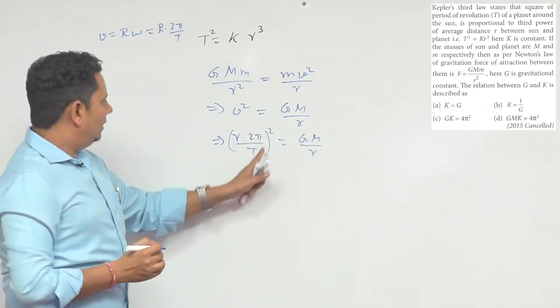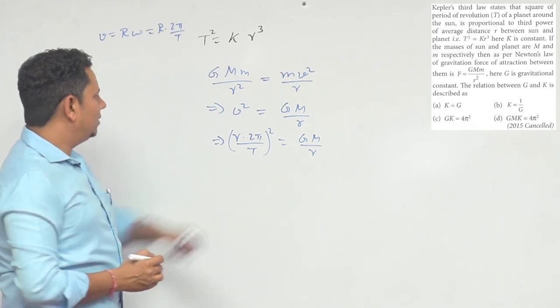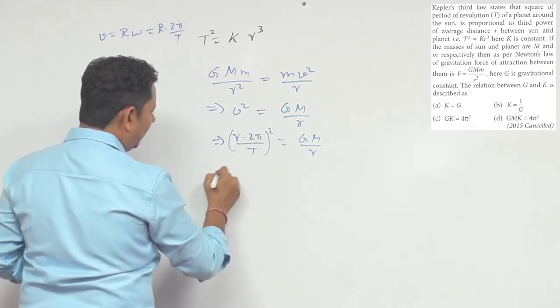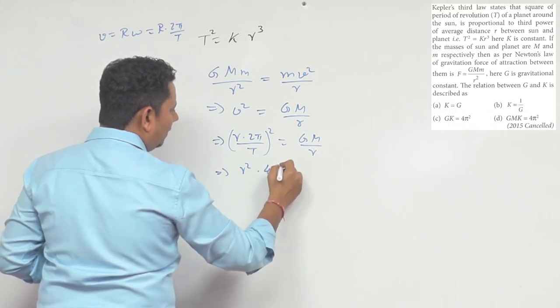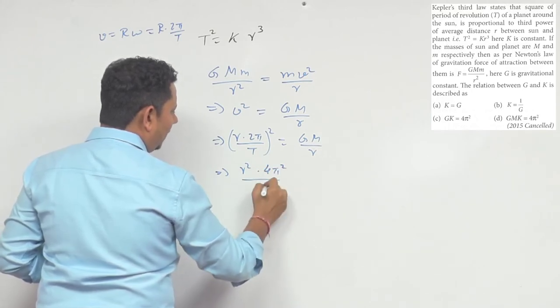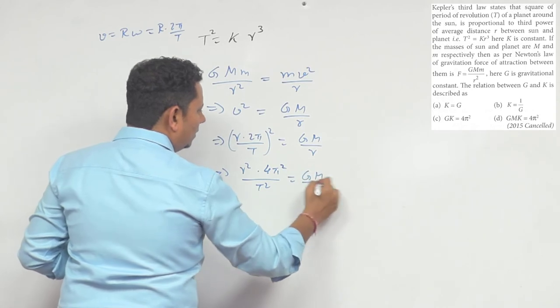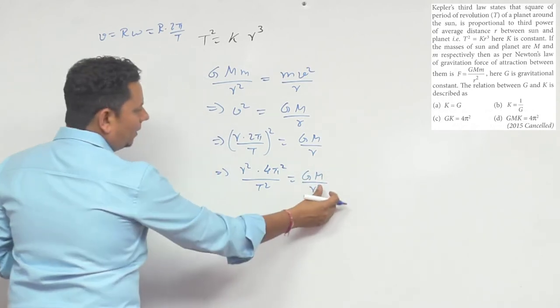Isme agar hum T aur r ke beech mein relation karein, to yahan par ye value ban gayi: implies r² × 4π²/T² = GM/r. Sorry, GM/r.